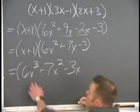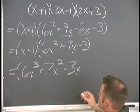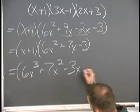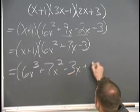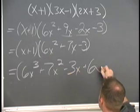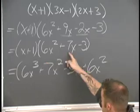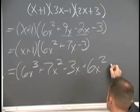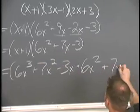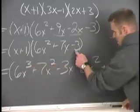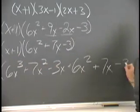Now we're going to multiply the positive 1 through. Positive 1 times 6x squared gives us positive 6x squared. Positive 1 times negative 3 gives us negative 3.